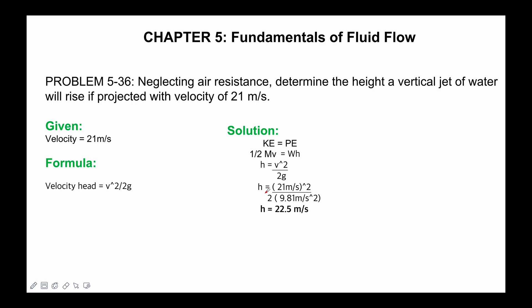Let's substitute the given values: height equals 21 meters per second squared over 2 times 9.81 meters per second squared. We will cancel the same units.